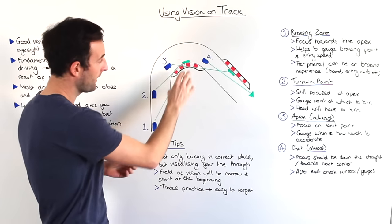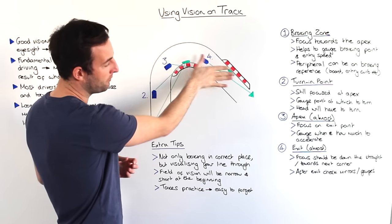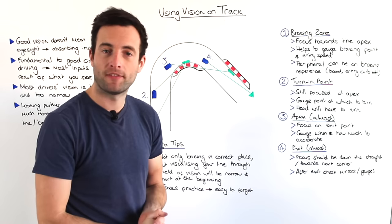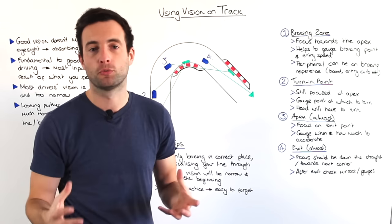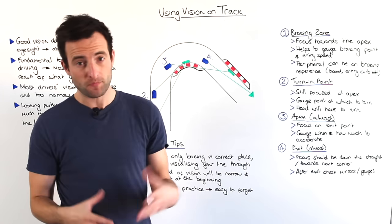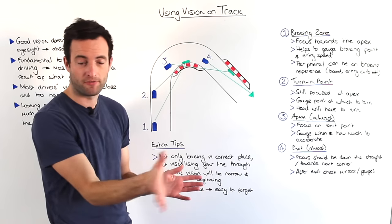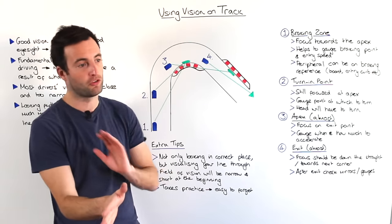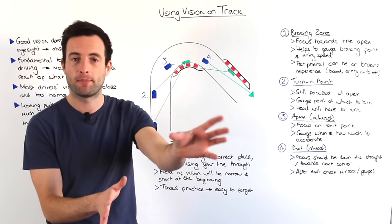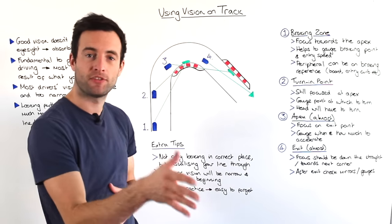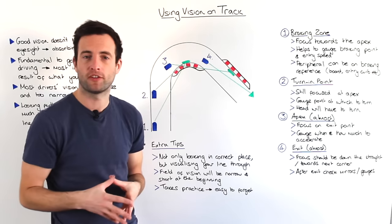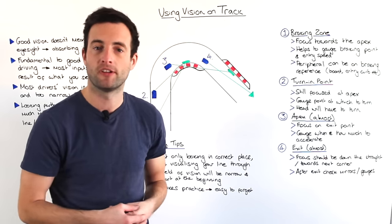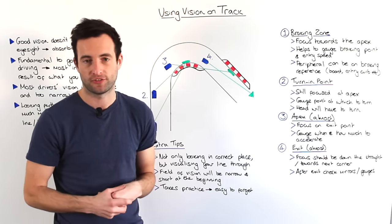The fourth point is after the apex, when you're almost towards the exit. At this point, you need to be looking well down the next straight or towards the next corner. If you have a right-hander followed quickly by a left, then on the exit you should already be looking at the apex of the next left. If it's just a straight, you should be checking the straight, seeing if there's any traffic, or using it as a good opportunity to check your mirrors, temperatures, and all the gauges.